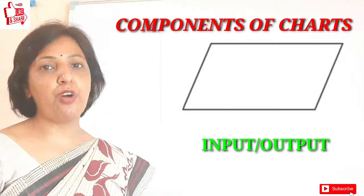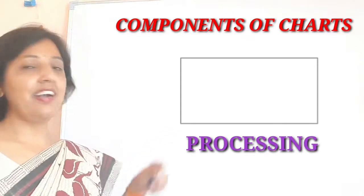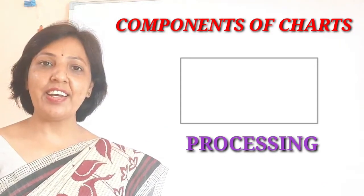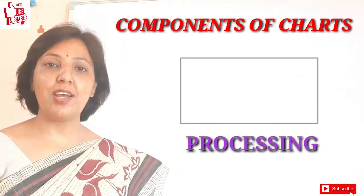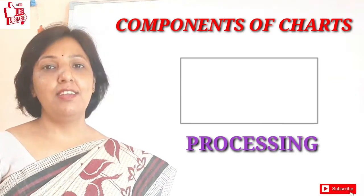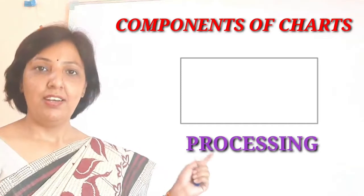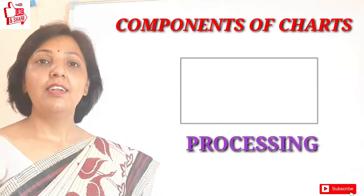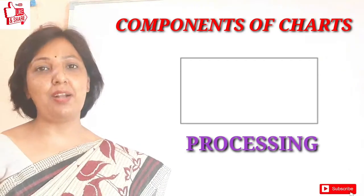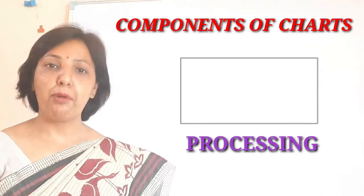The next one, that is the rectangle shape. This rectangle shape is basically representing you the processing box. This processing box will show you the processing is taking place in this rectangle. Basically the mathematical instructions have been calculated in this rectangle. So this rectangle is representing the processing box.